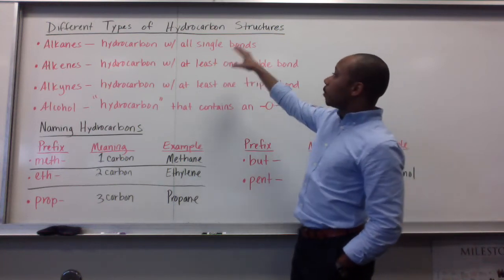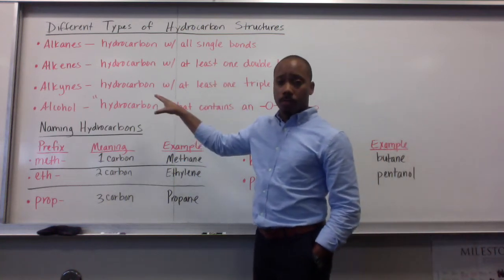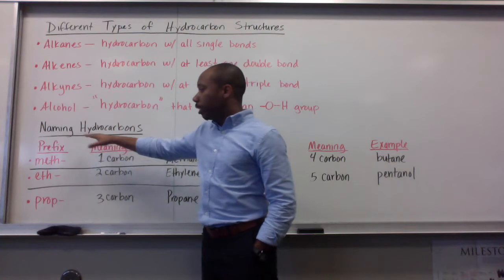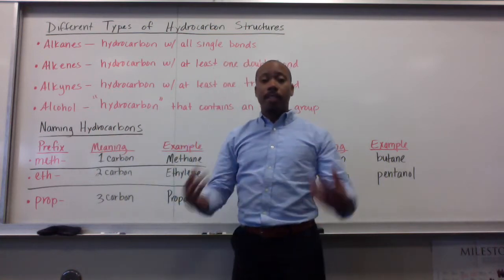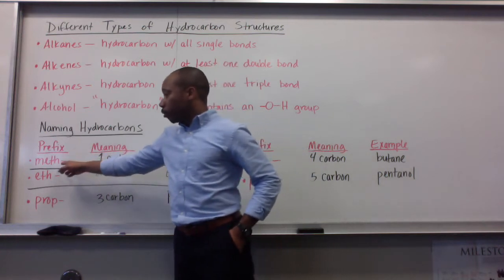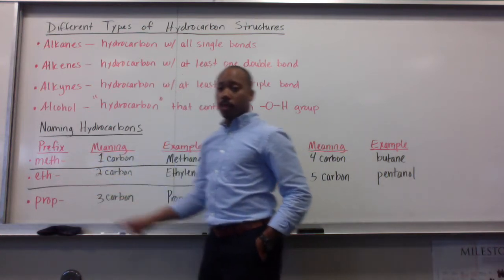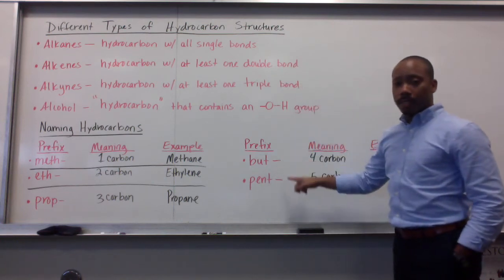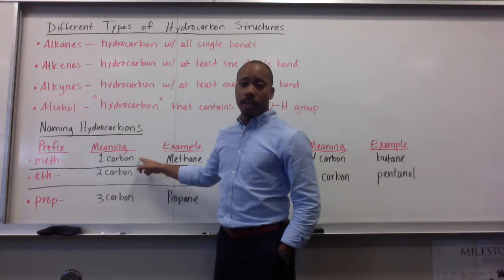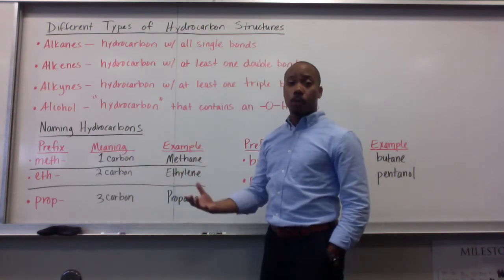We can name these structures more specifically using a naming system. The naming system for hydrocarbons is based on prefixes. The first prefix is meth, then eth, then prop, then but, and pent. Meth means one carbon — an example would be methane. We've all heard of methane gas and have used it in the laboratory already. Eth means two carbons — an example would be ethylene, the substance we've been talking about, with the chemical formula C2H4.